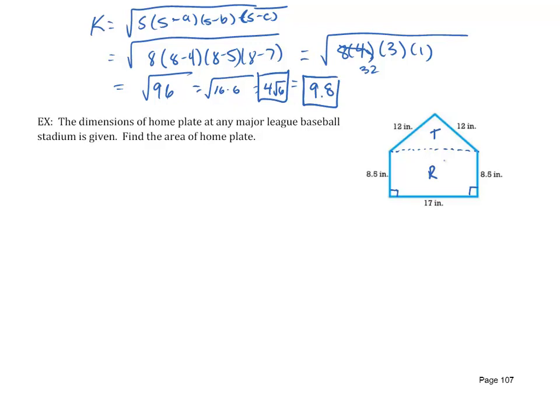For example, the area of R would be 17 times 8.5. And if I just plug 17 times 8.5 into my calculator, 17 times 8.5 gives me 144.5 square inches.